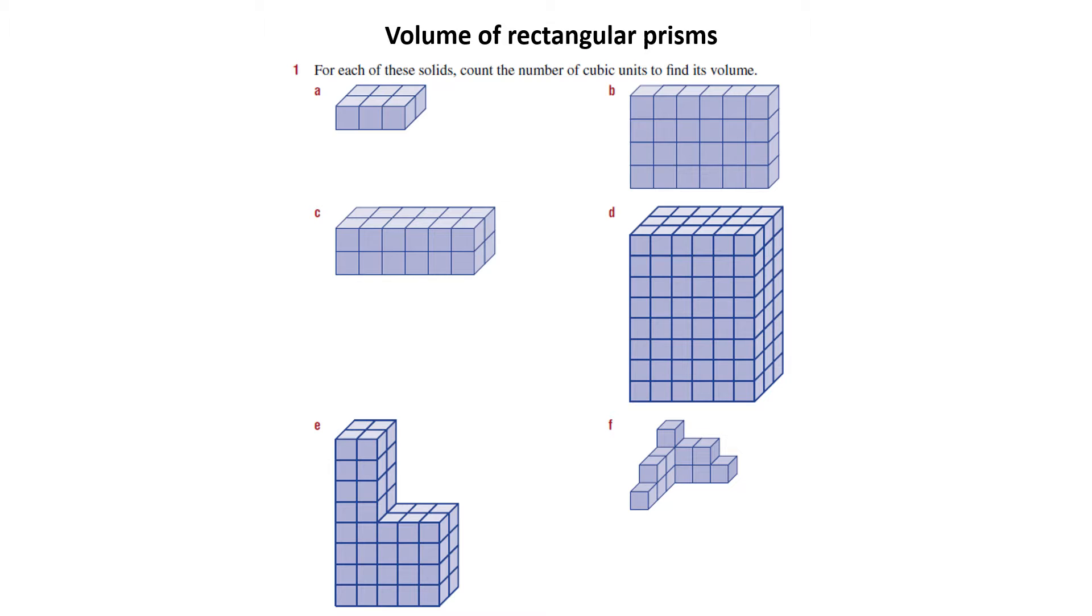So first one I'm going to pick is A, and it's basically just counting the cubes 1, 2, 3, 4, 5, 6. Now you can do whatever you want, but I'd put that answer as 6 cubes.